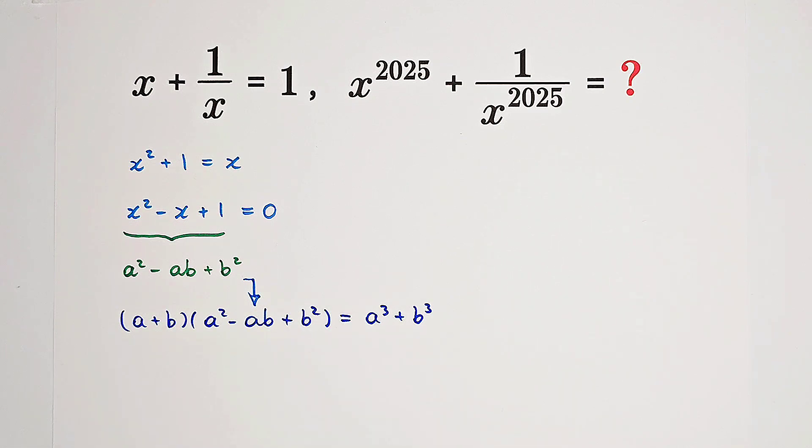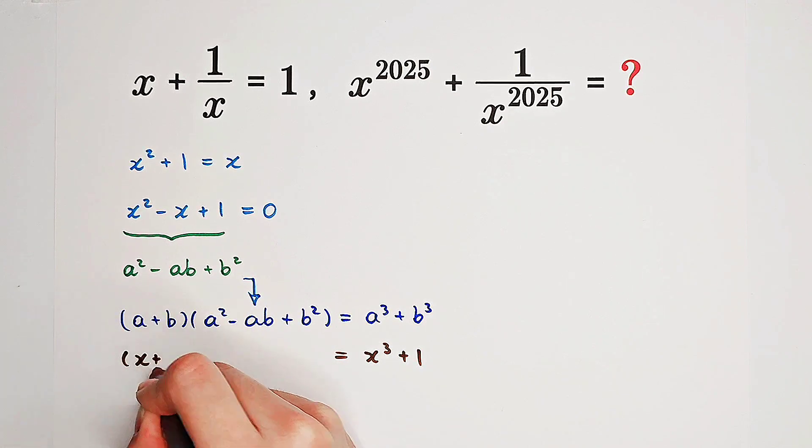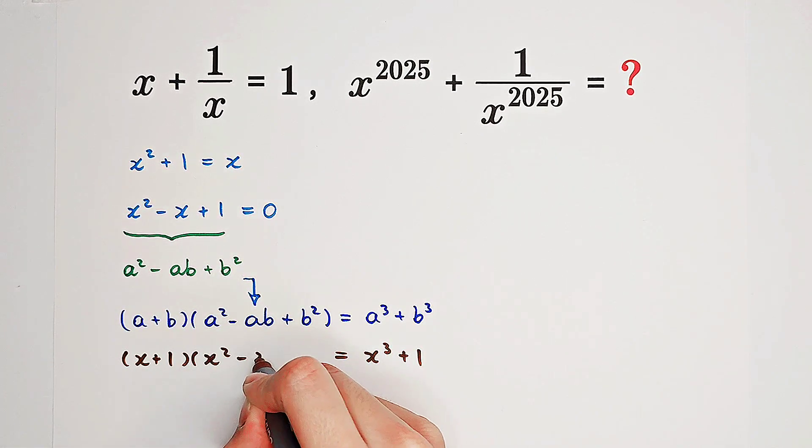And in our case, it is x cubed plus 1 equals x plus 1 times x squared minus x plus 1. Very good.